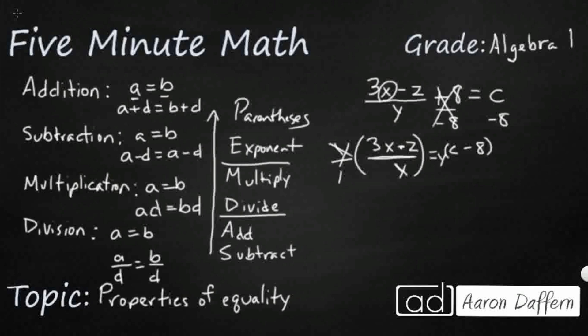So that's going to leave me with 3X minus Z equals, and I'm just going to leave it like this Y times C minus eight. I could distribute it out if I want to, but it kind of serves the same purpose. It's not like I know what C or Y actually is.